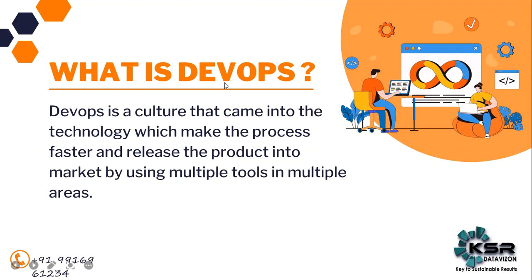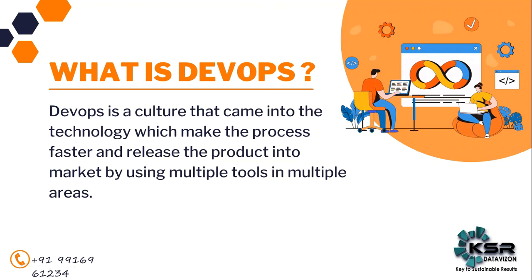Basically, DevOps has two terms in it - one is Dev and the other is Ops. Dev is nothing but Development and Ops is nothing but Operations. In the older days, before DevOps, there were two separate teams: the Dev team, responsible for developing the code, and the Operations team, responsible for deploying, testing the code, and finally delivering the product to the end user.